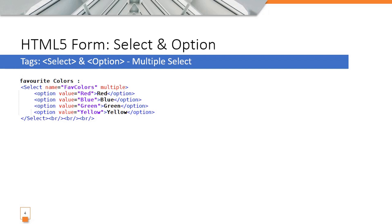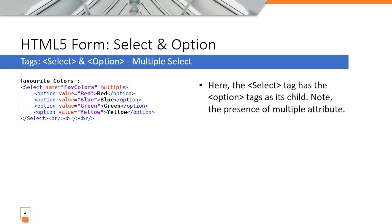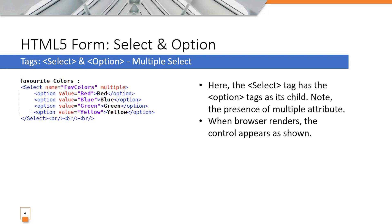The favorite color example is similar to the previous one, with the key difference being the multiple attribute specified on the select tag. The name is 'favorite color' and the multiple attribute is present, meaning the browser will render this as a list box. The option tags are the same structure, but now multiple selection is enabled.